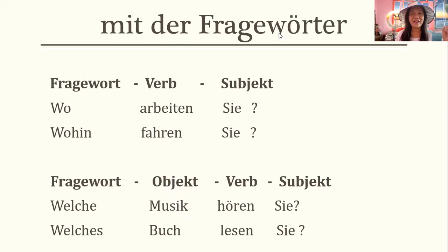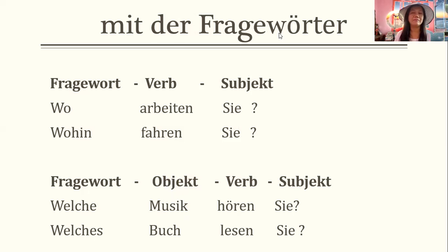How are we going to form a sentence with a question word? The pattern is: question word, verb, subject. Zum Beispiel: the question word is wo, the verb is arbeiten, the subject comes at the end — Wo arbeitet sie? And then: Wohin fährt sie? What about with an object? The pattern is: question word, object, verb, subject. For example: Welche Musik hört sie? Or: Welches Buch liest sie?